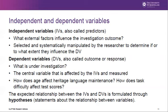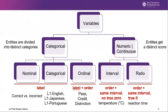The distinction between variables also has to do with different levels or scales of measurement. Let us now turn to different types of variables or variable scales. We're going to start by discussing categorical variables — these have to do with entities that are divided into distinct categories based on the label they're assigned. Here we can look at nominal, categorical, and ordinal variables. Nominal variables are distinguished based on the label but have no particular order — for instance, correct versus incorrect, or yes versus no, giving us an either-or relationship.